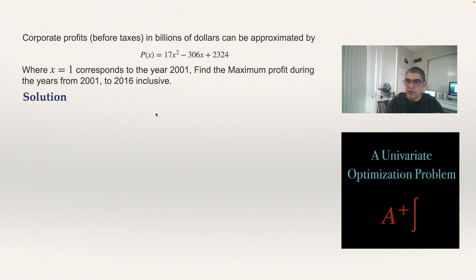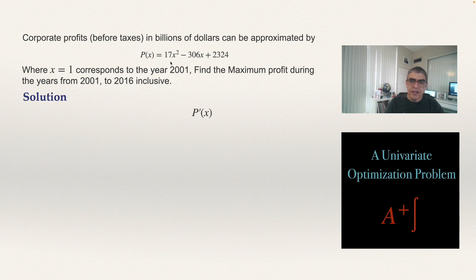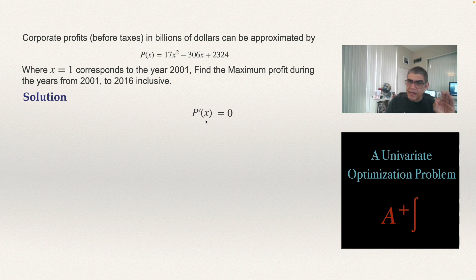To solve this, the first step is to compute the derivative of the profit function. Since this is a polynomial, the derivative exists at every point. The critical values will be the points where the derivative equals zero, so we compute the derivative, set it equal to zero, and solve for x.